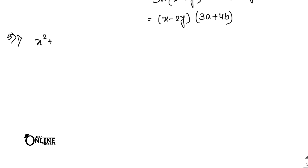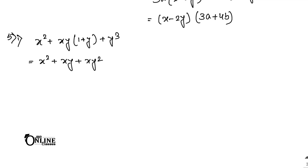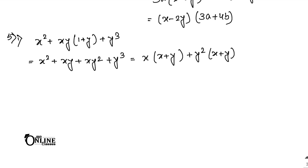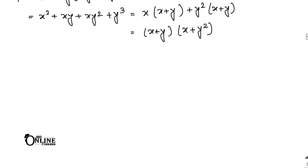Sum 5.1: (x² + xy)(1 + y) + y³. First multiply out: x²·1 + x²·y + xy·1 + xy·y + y³ = x² + x²y + xy + xy² + y³. Common x from the first two gives x(x + y). Common y² from the next two gives y²(x + y). So (x + y) is common, giving (x + y)(x + y²) — written as (x + y)²... the answer is (x + y)(x + y²).